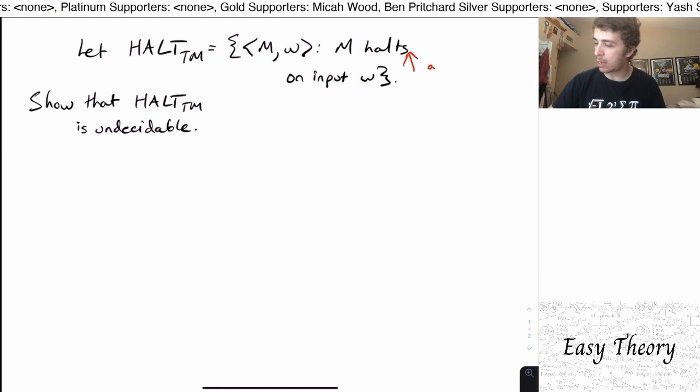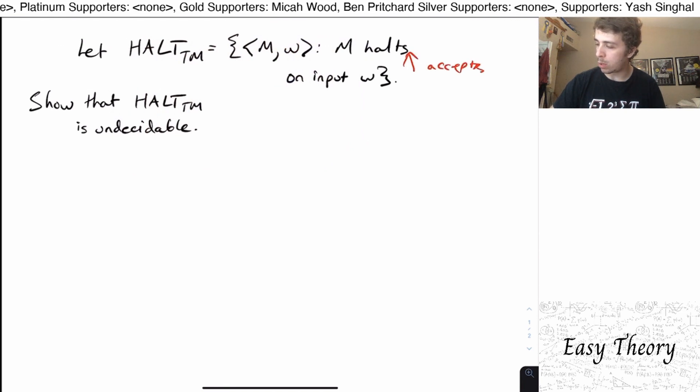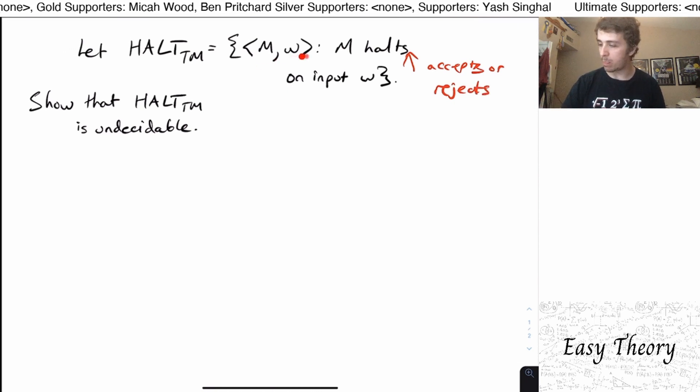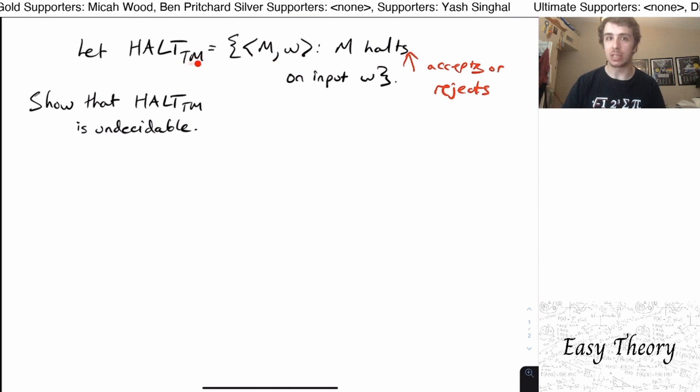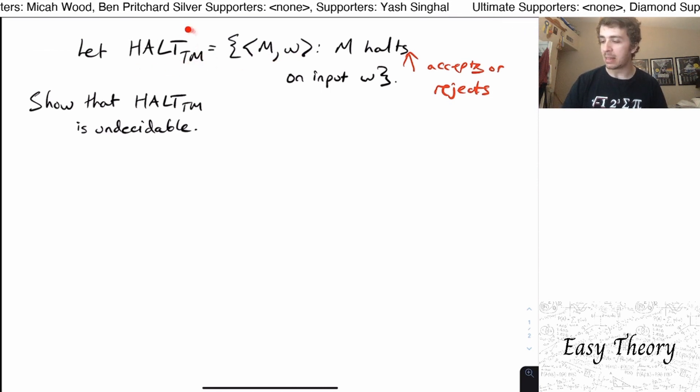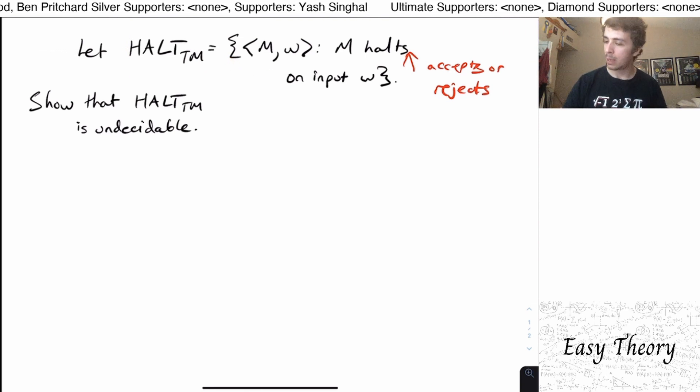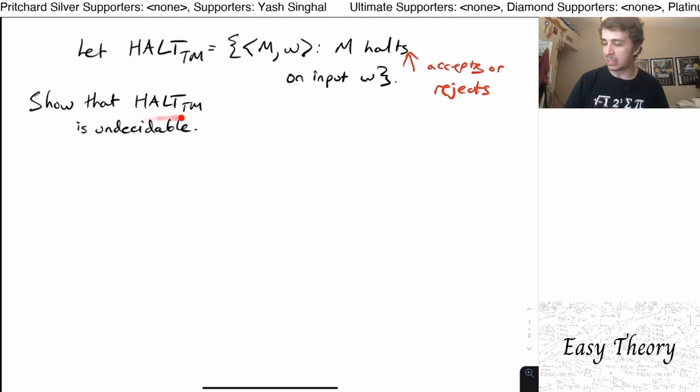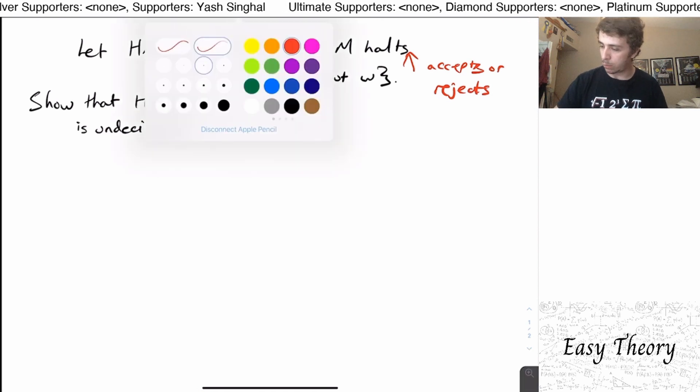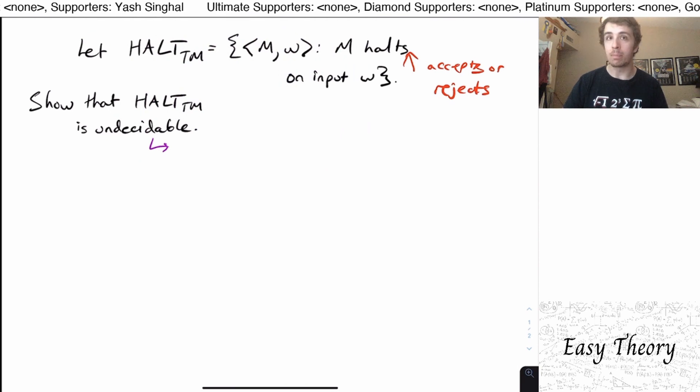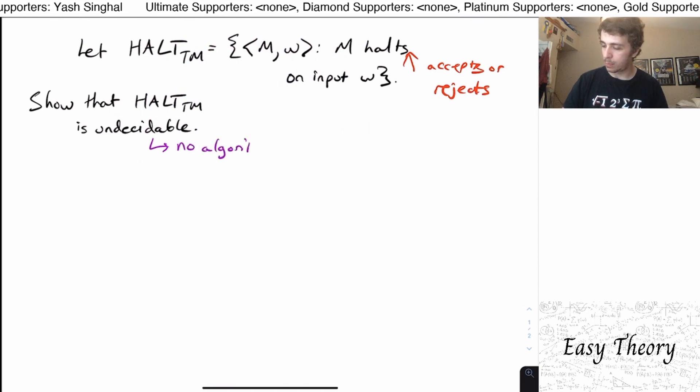So that means that it either accepts or rejects. We don't care which one. As long as it outright accepts or rejects, then we put this pair inside of the HALT_TM language. Remember that these are always sets of strings because they're just languages. So what we want to show is that this language is undecidable. So for those of you who don't know or haven't seen this before, undecidable means there's no algorithm for HALT_TM.